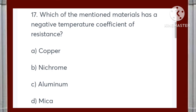Which of the mentioned materials has a negative temperature coefficient of resistance: copper, nichrome, aluminum, or mica? The correct answer is D — mica.